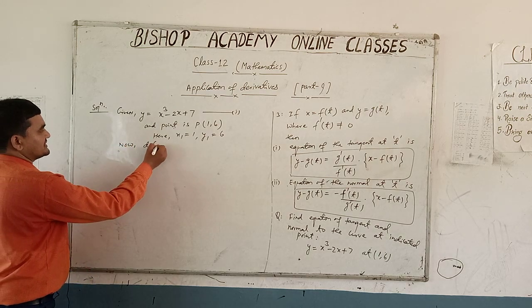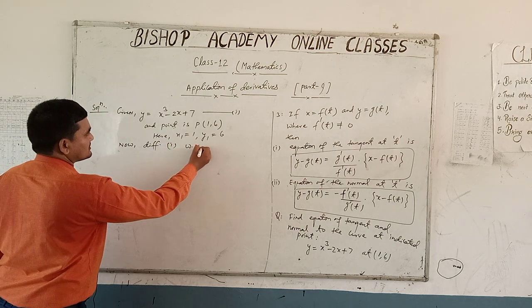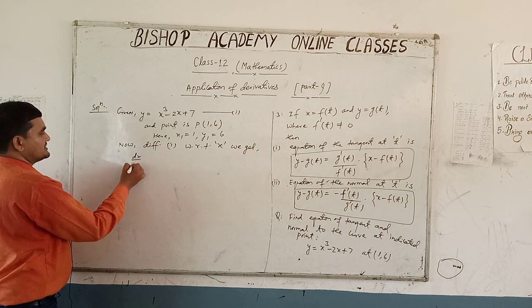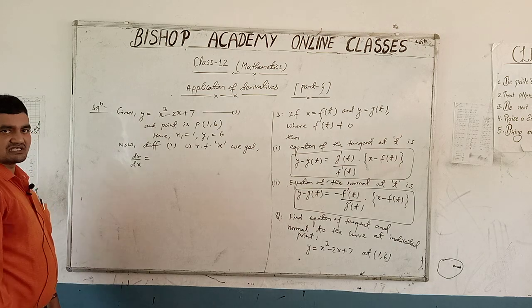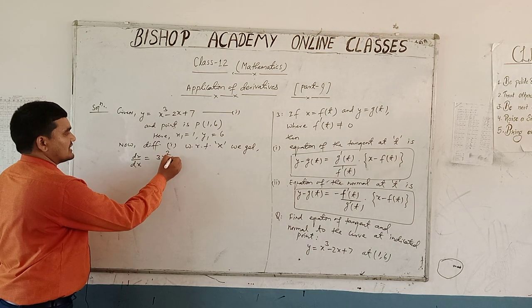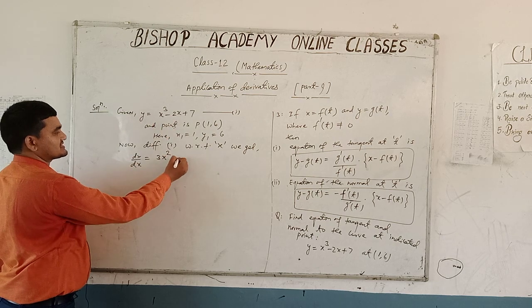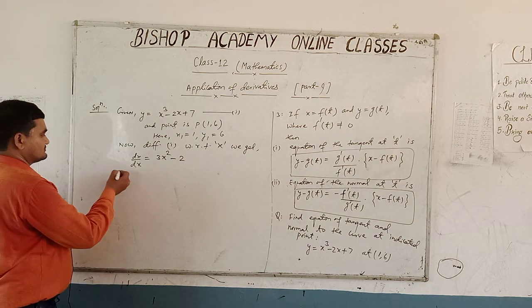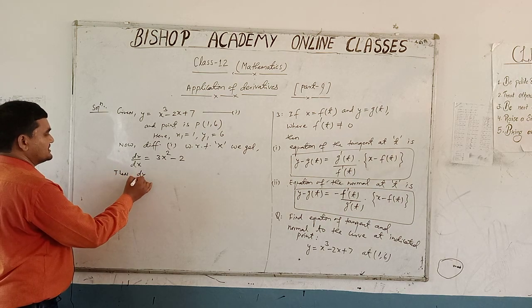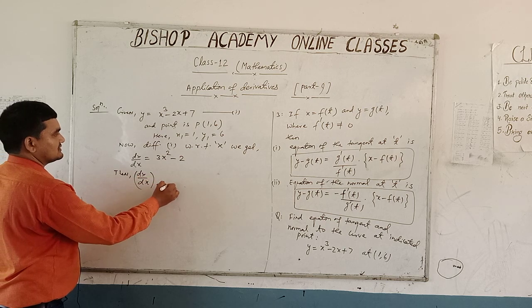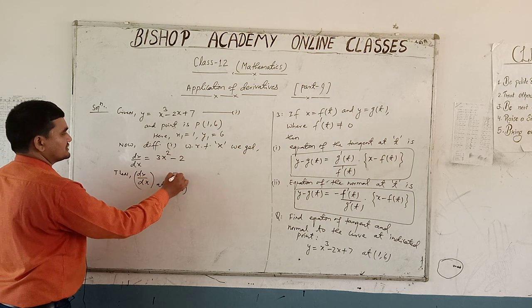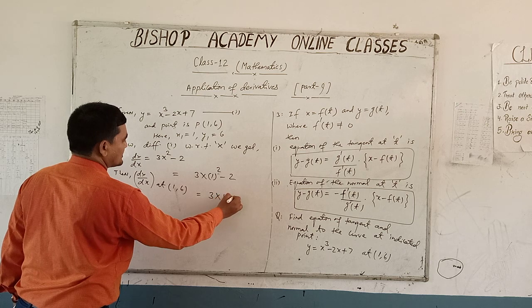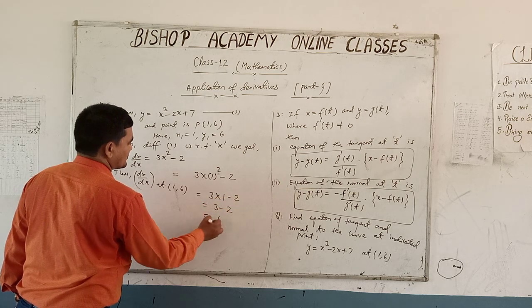Differentiating equation number one with respect to x, we get dy/dx = 3x² − 2. Therefore, dy/dx at (1, 6) equals 3(1)² − 2 = 3 − 2 = 1.